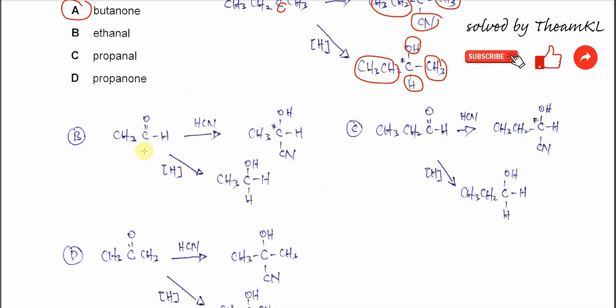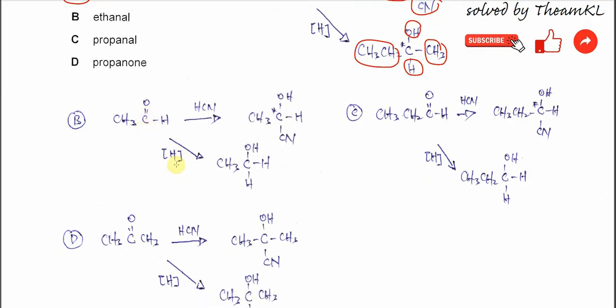But when ethanal undergoes reduction, the oxygen gets one hydrogen and this carbon gets one hydrogen. It will form this ethanol. There is no chiral center inside, so B is not the answer.